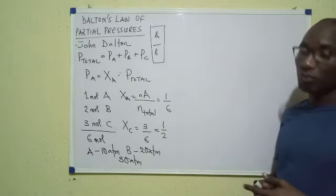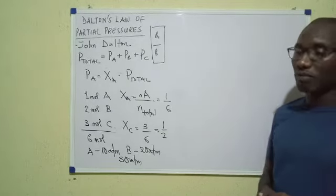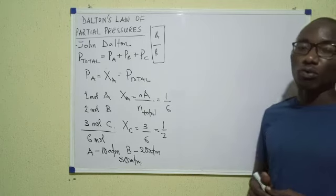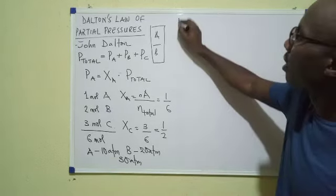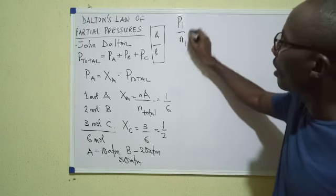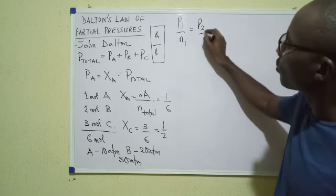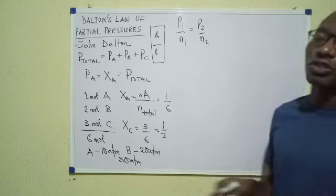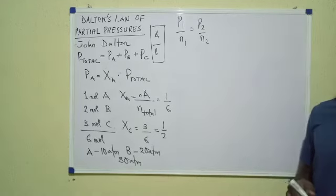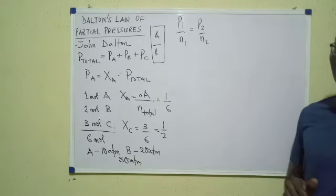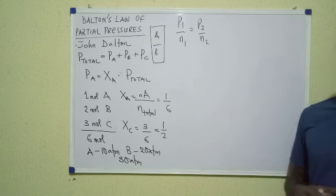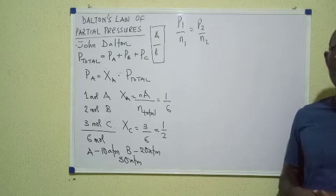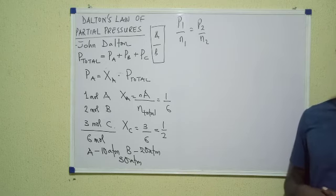There's another formula used for solving some questions on Dalton's Law of Partial Pressures. We write it as P1 over N1 equals P2 over N2. At some point you will need this formula. There are some simple questions on Dalton's Law that require just this formula and you're okay. I'll give you a few questions on Dalton's Law and let's see how we can solve them.